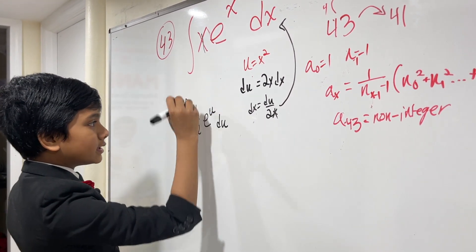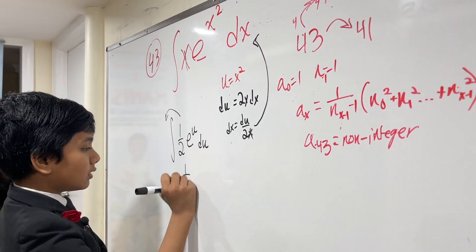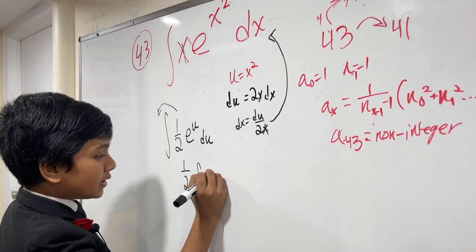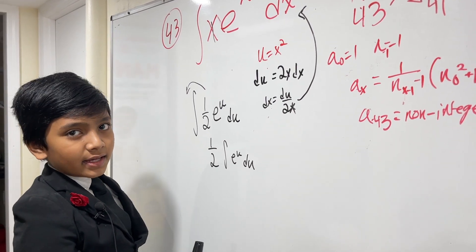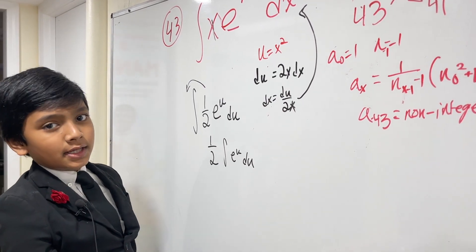And now, we can just take this 1 half out. And we all know the integral of e to the u du is simply e to the u, because the derivative of e to the x is just, say it with me, e to the x.